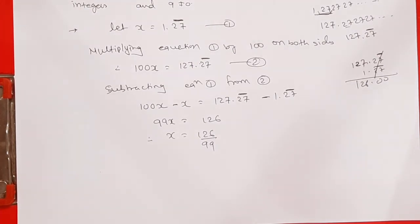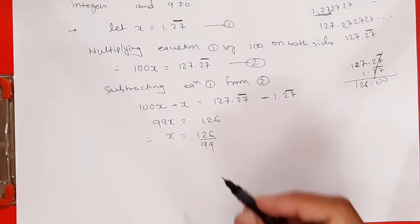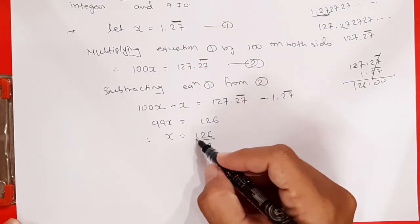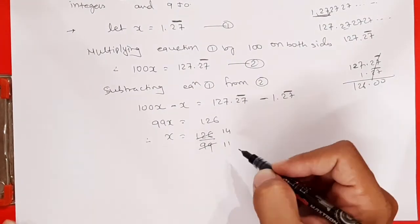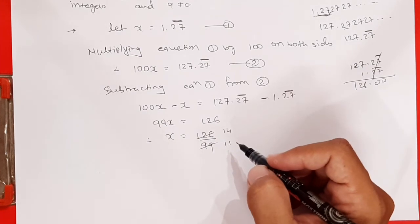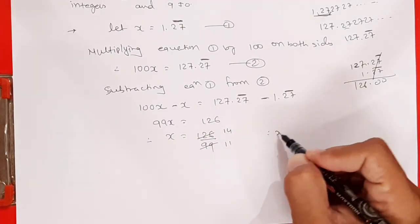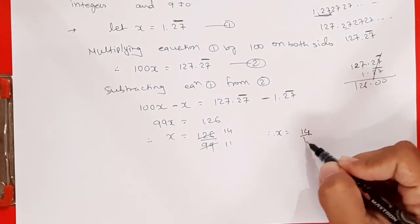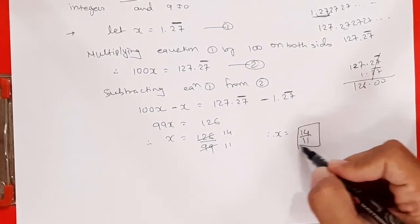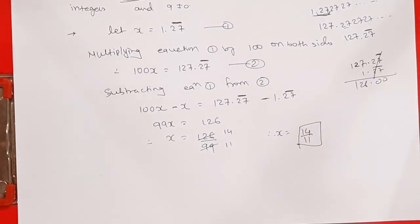Cutting possible hai? 9 se cutting hogi dono ka: 126 ÷ 9 = 14, aur 99 ÷ 9 = 11. Therefore x is equal to 14 upon 11. So this is the answer — humne 1.27 bar ko P by Q form mein represent kar diya.